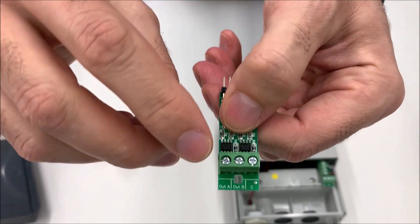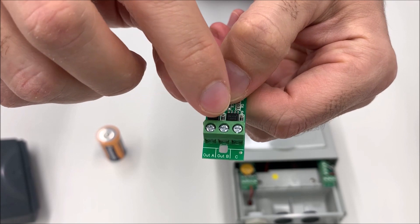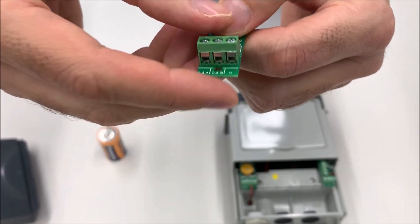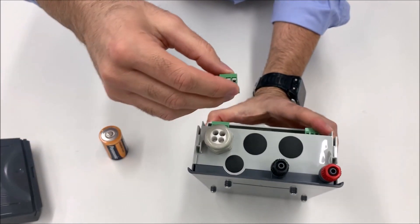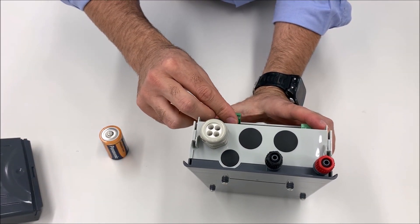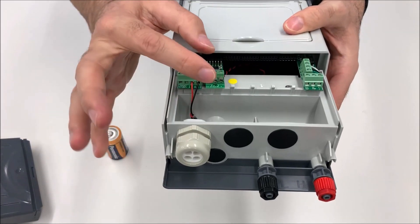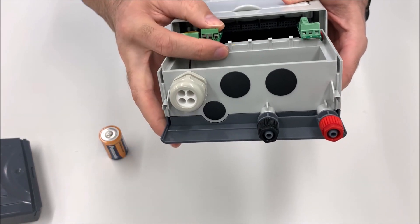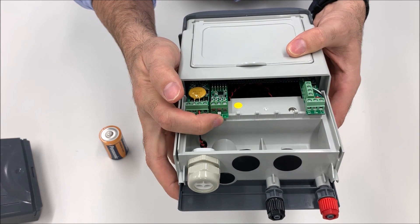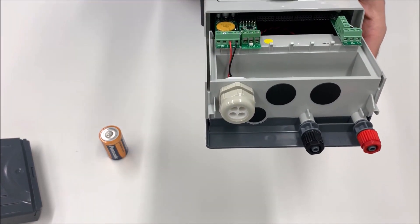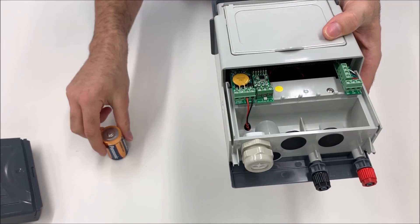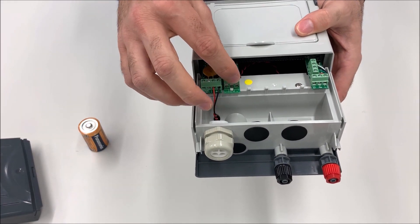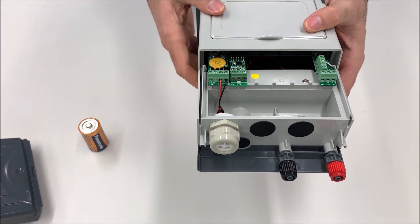Here you can find outlet A, outlet B, and common. And to put it again is very easy. You only need to put the pin in the correct position, push it a little bit, put down, and push it again. Always be careful to remove the batteries when you are touching the extension module, or disconnect the electricity.